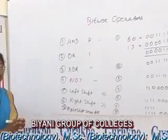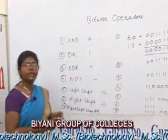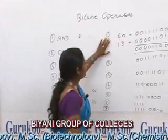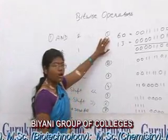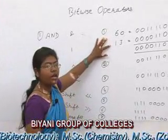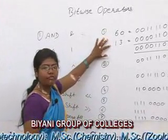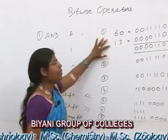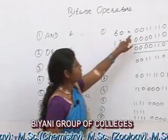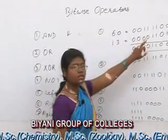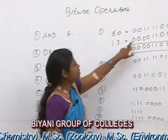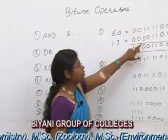Let's see how they work internally. If we take the example of two integer values, that is 60 and 13, we first write them in binary code. That is 00111100 and 13 is 00001101.